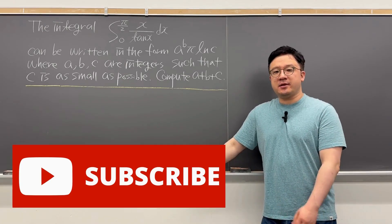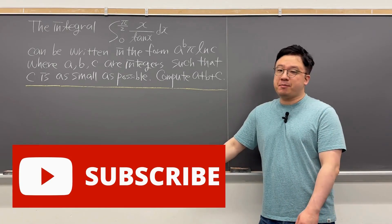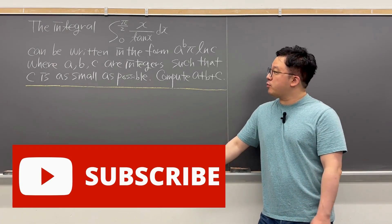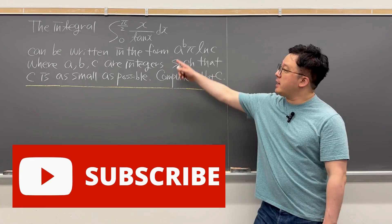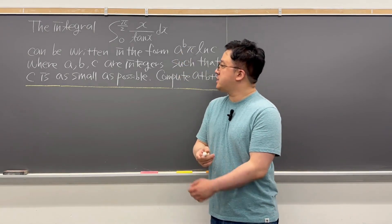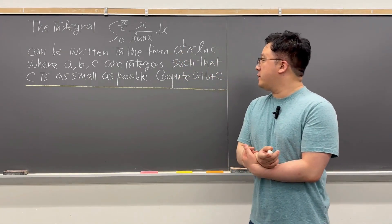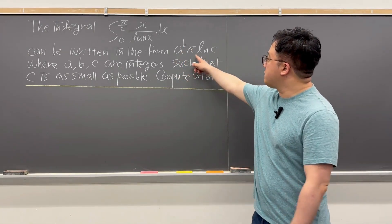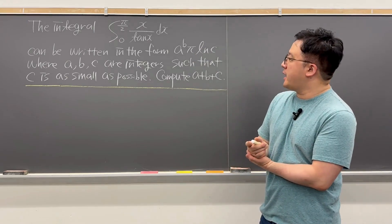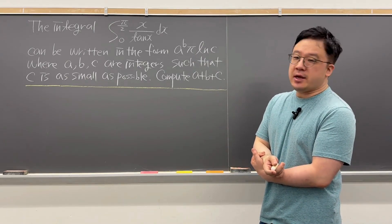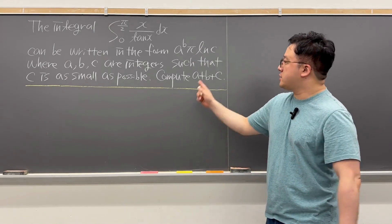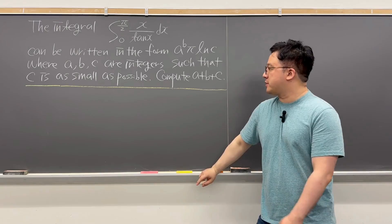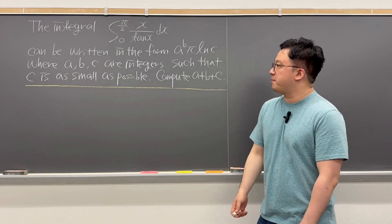This is a pretty interesting integral from the Berkeley Math Tournament. The question is: the integral from 0 to π/2 of x over tan(x) dx can be written in the form a^b · π · ln(c), where a, b, c are integers such that c is as small as possible. Then compute a + b + c.